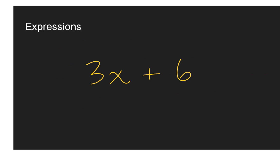To wrap up, we're going to talk about some terminology related to expressions. An expression is just a combination of numbers, variables, and mathematical operations like adding, subtracting, multiplying, and dividing — like the example three x plus six. Expressions have what we call terms. Here, three x is a term and positive six is a term. Anything separated by a plus or minus — the adding or subtracting — is considered a term.